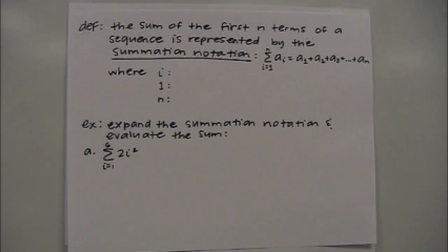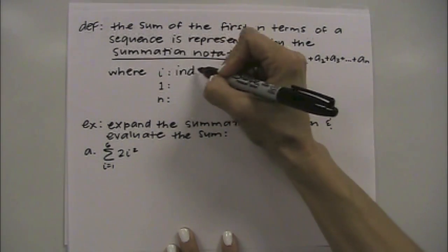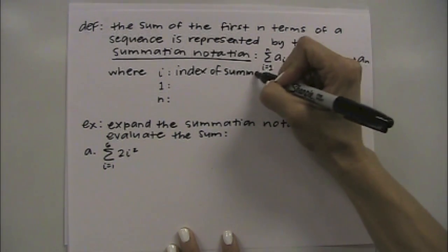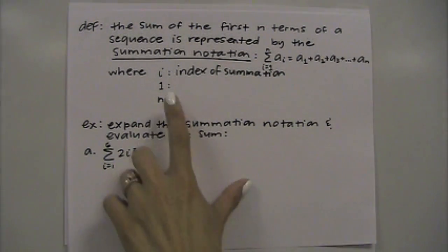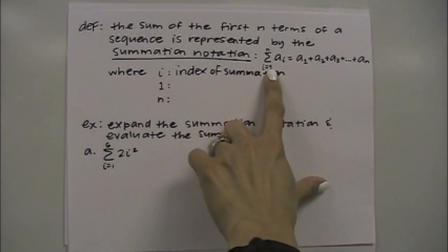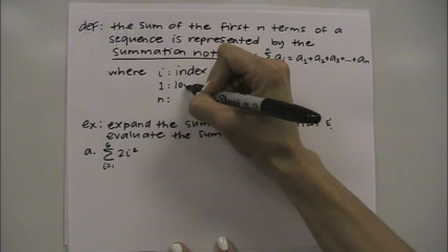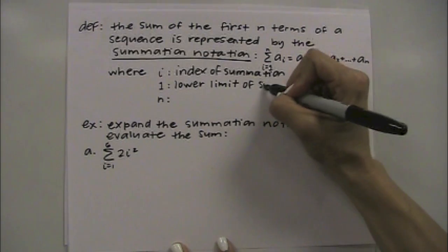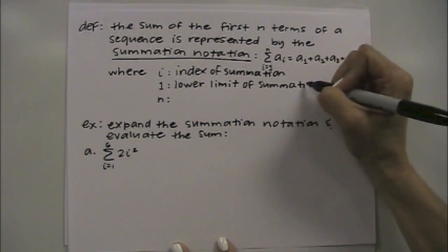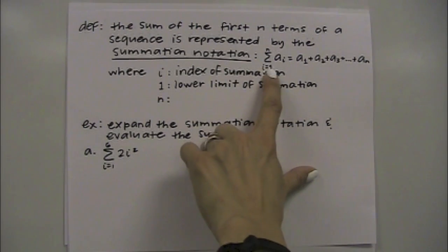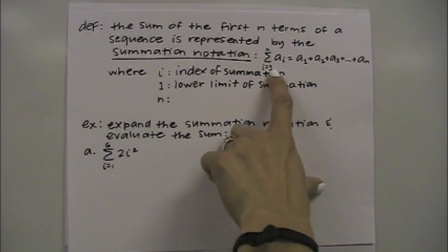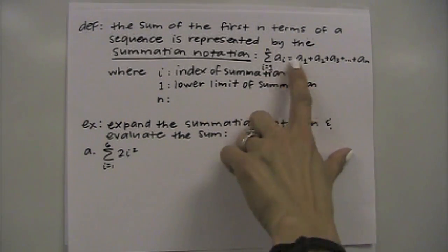For this notation we have right here, i represents the index of summation. The number 1, in this case it's down here on the bottom of the sigma, that's going to be your lower limit of summation. So it's whatever value is down here is what you start to plug in with. This doesn't need to be a 1, it could be 0, it could be 2, 3, it could be any value. So again whatever is on the bottom, that's the number you're going to start plugging in with.